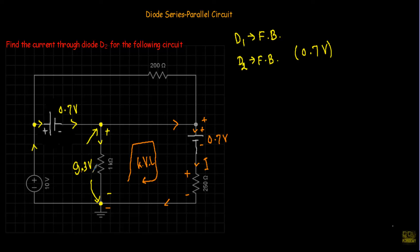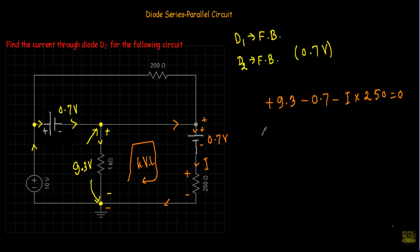Applying KVL: starting from one terminal, I encounter the 9.3V source (negative terminal first, so +9.3V), then the 0.7V diode replacement (positive terminal first, so −0.7V), then the 250Ω resistor (positive terminal first, so −I×250). Setting the sum to zero: 9.3 − 0.7 − 250I = 0, giving I = 8.6V ÷ 250Ω = 34.4 mA.